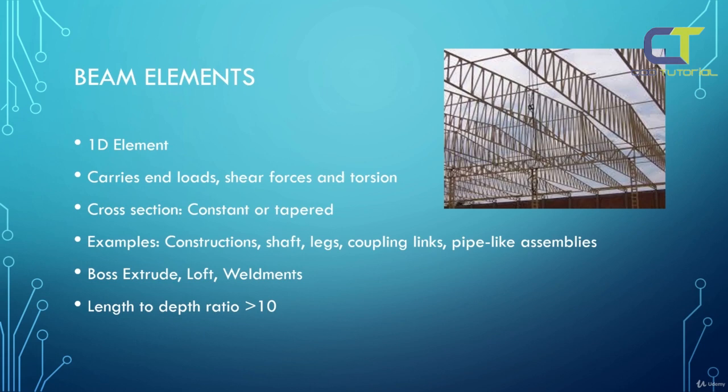Some examples include constructions such as shafts, legs, coupling clings, and pipe-like assemblies. We can create an object that will be treated as a beam element by using boss extrude, loft, or weldments. The ratio of the length to the depth of the cross section has to be bigger than 10.